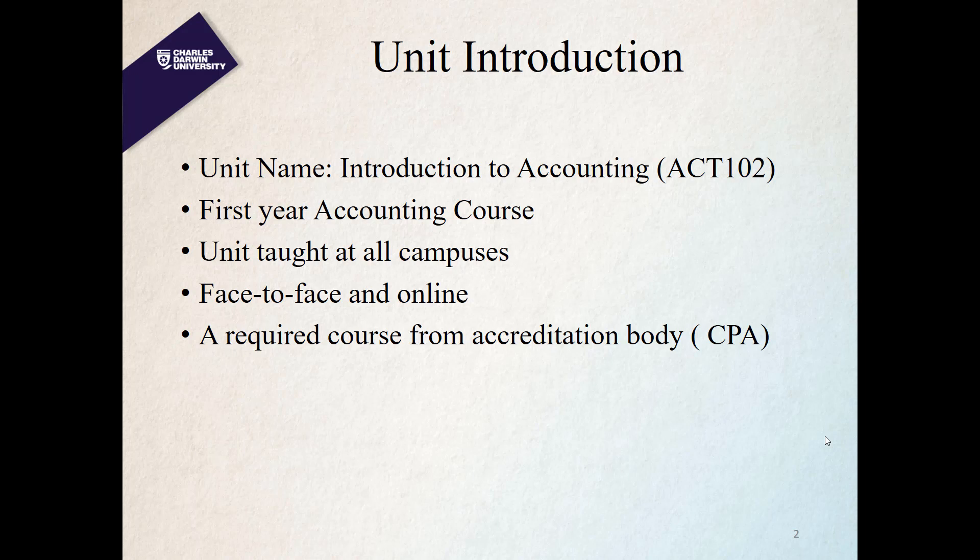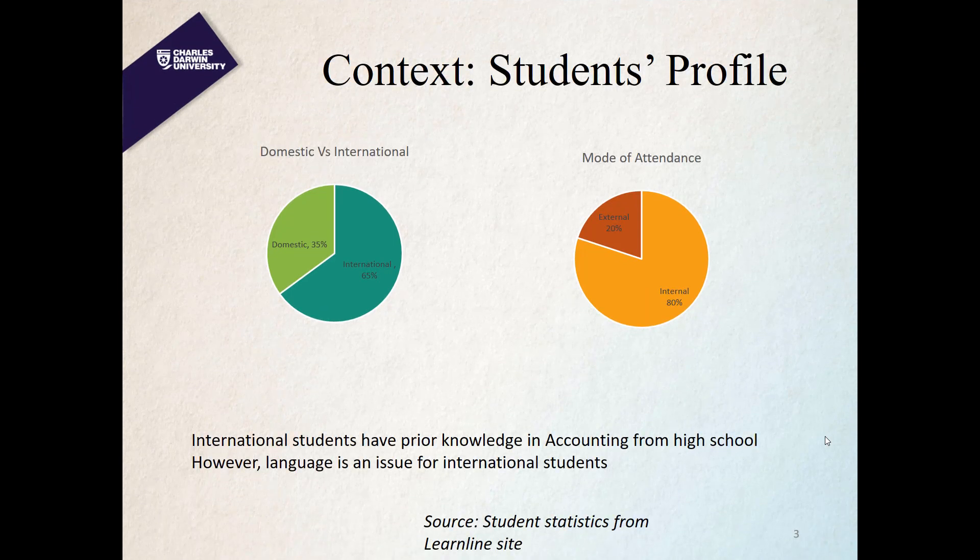Before I go in depth on the assessment items and strategy, I would like to introduce the unit. The unit name is Introduction to Accounting, ACT 102 — basically a first year accounting course and a mandatory course for all Bachelor of Accounting students. It is offered face-to-face and online across all semesters including summer, and is a required course from accreditation bodies like CPA and CA. CPA stands for Certified Practising Accountants.